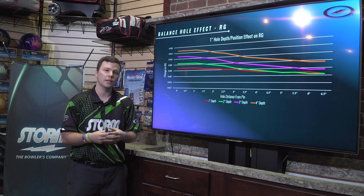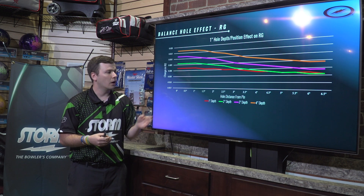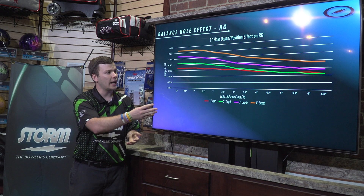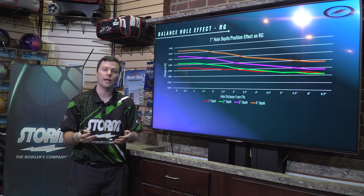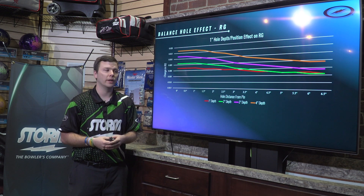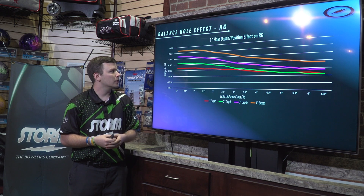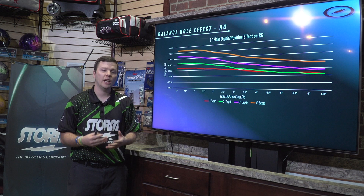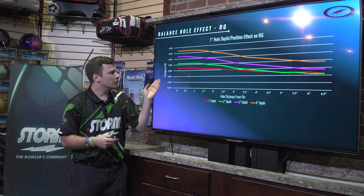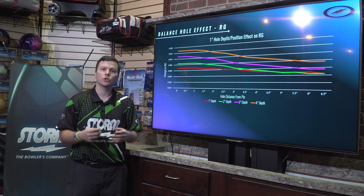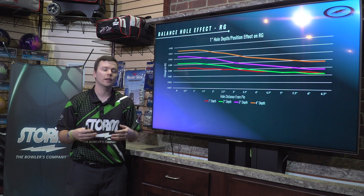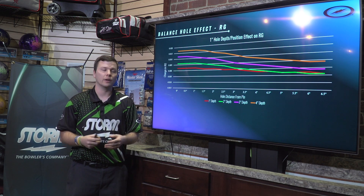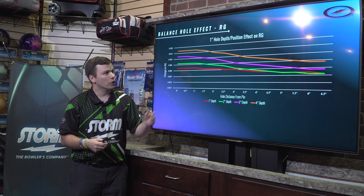If we look at the X-axis — the horizontal axis — that represents the hole distance from the pin, so how far away that hole is from the pin. On the extreme left we have zero inches, which would be straight through the pin, and as we go further right we're getting farther away from the pin. If we look at the Y-axis — the vertical axis — we have the change in RG value. Near the middle is zero change; above that the RG is going up, below that it's going down.